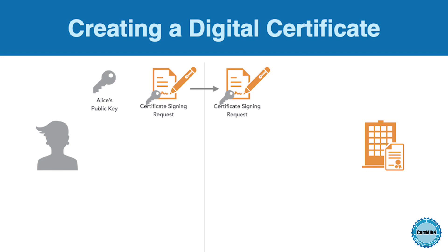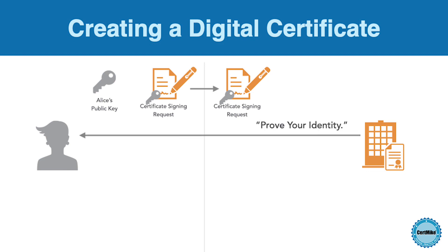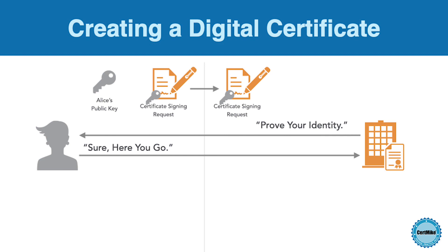This might be an independent organization that's trusted by many people around the world, or it might be a private certificate authority operated for use within her organization. When the certificate authority receives the CSR, it first takes whatever action is necessary to validate the identity of the requester. It is the CA's responsibility to perform sufficient identity verification to put its own seal of approval on the certificate. This is in the CA's best interest because if a CA starts issuing invalid certificates, people will stop trusting that CA, and that CA is going to find itself out of business pretty quickly.